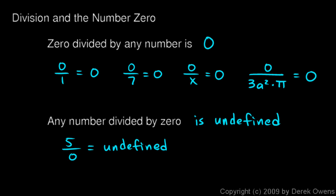So know those two things. If the zero is on the top, the answer will always be zero. If the zero is on the bottom, you can't do it. You say that there is no answer. You could write no solution, or you could just say it's undefined, meaning that this operation, dividing by zero, is undefined.